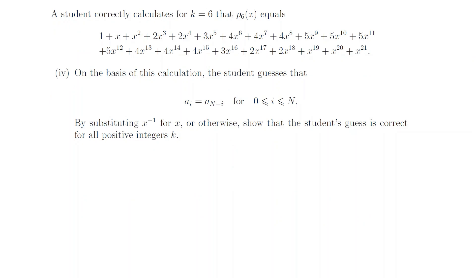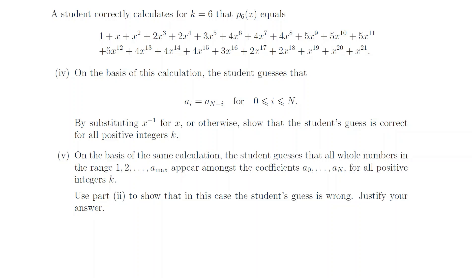Part 4. Substitute in 1 over x, then multiply by x to the power of n. On the left we get back to p_k(x), and on the right we get the coefficients in reverse order. Part 5. There are only n plus 1 coefficients, but we showed in Part 2 that the biggest coefficient is bigger than 2 to the k over (n plus 1). In order to accommodate all the coefficient values, we need (n plus 1) squared to be bigger than 2 to the k. But that's not true for large k, so the student is wrong.